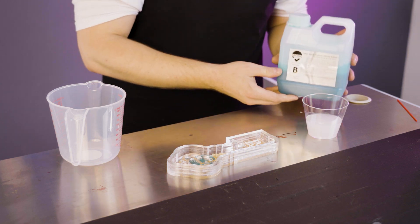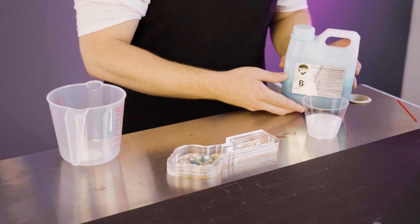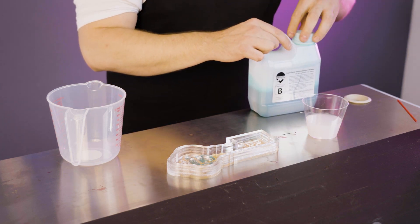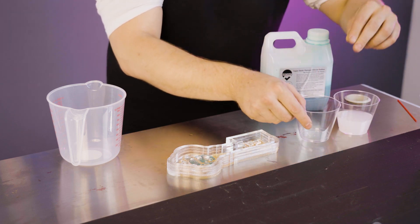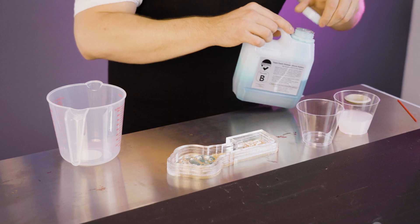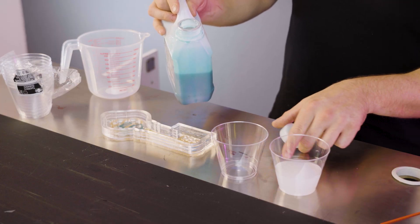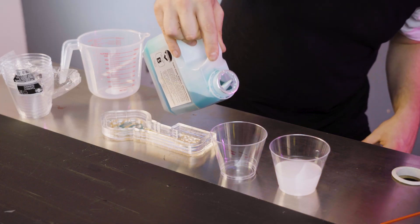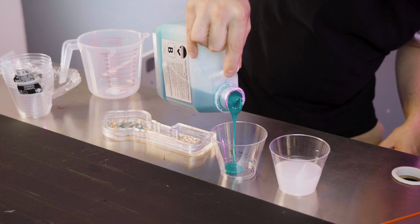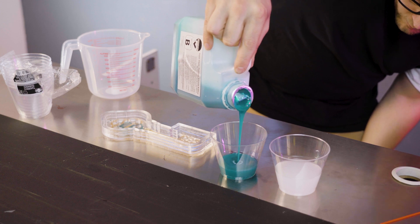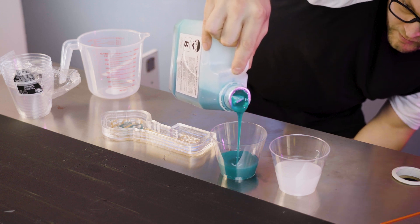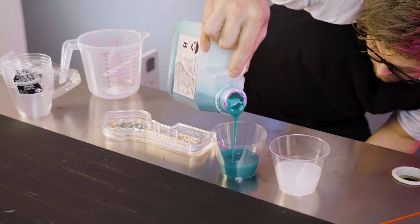And now we're going to add part B to our mixture. What we're going to do is take this same size cup and fill it to the exact same height as part A. You could measure it out, but this makes it very easy. Just keep it visual and go about the same height as the other cup.